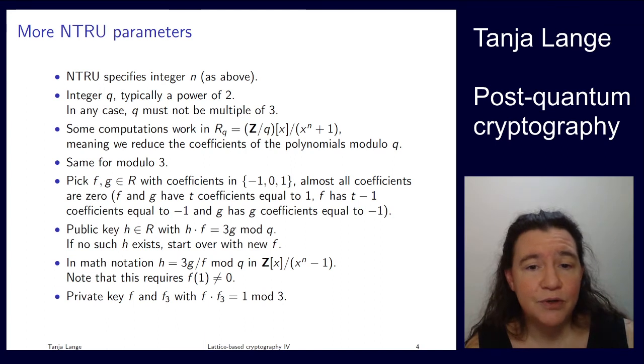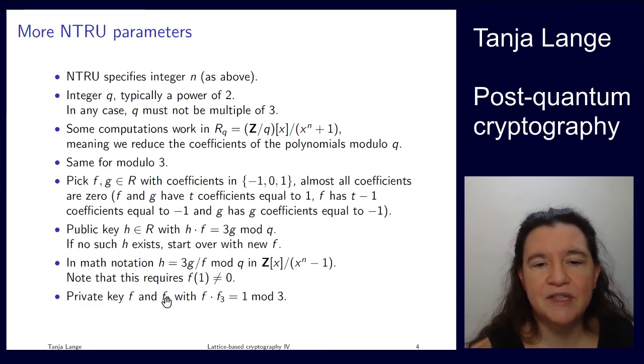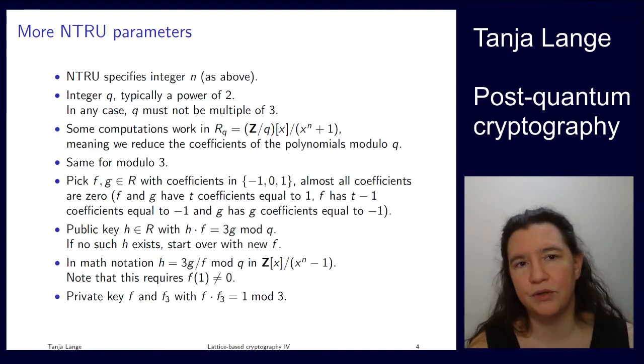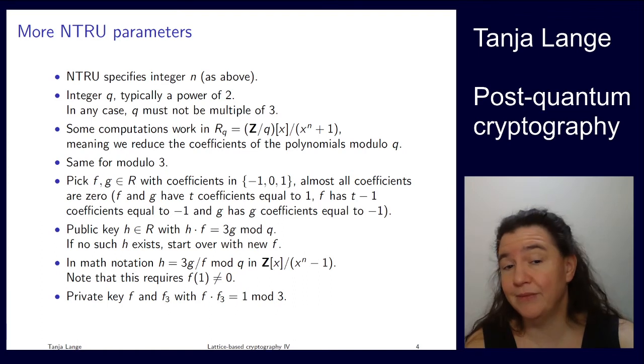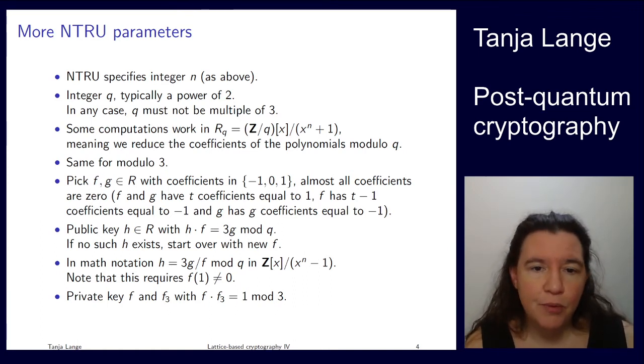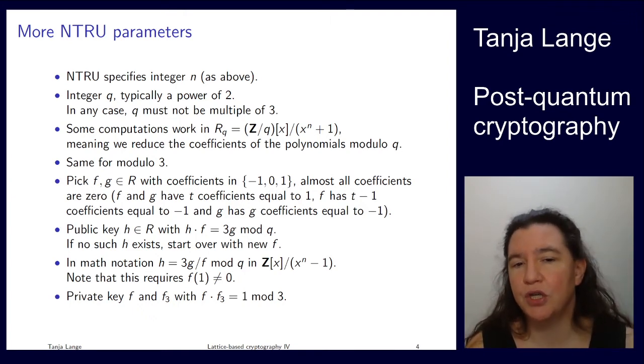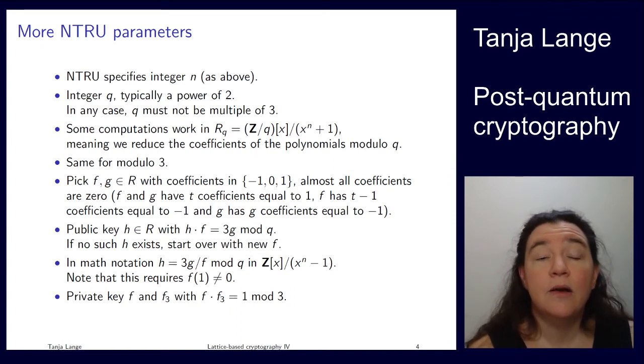So, try. If it doesn't work, you pick a new f. Then we have another part of the private key. So we know the f and the g. And then what we also remember is, well, f and we remember some f sub 3, which is the inverse of f mod 3. So it's again in this polynomial ring, but then instead of mod q we're computing mod 3. You still with me? Okay, so h is a fraction of small polynomials, but itself will have large coefficients. Now, there is a mod q running around, so that means that the coefficients of h cannot be larger than q, but q is reasonably large. So h has a big norm, whereas f and g have a small norm. Okay, so now that we know how we get this public key, that's just h, and the private key, which is f and f_3, we can now encrypt and decrypt.